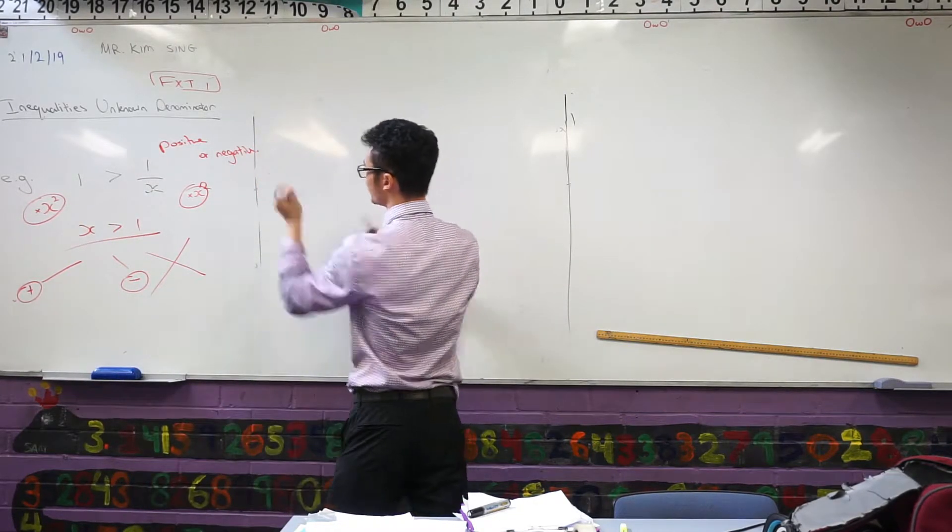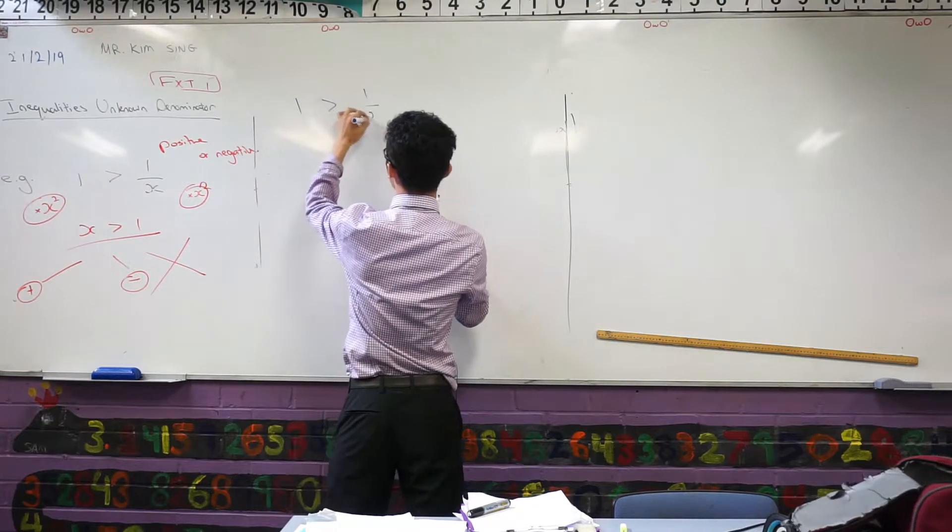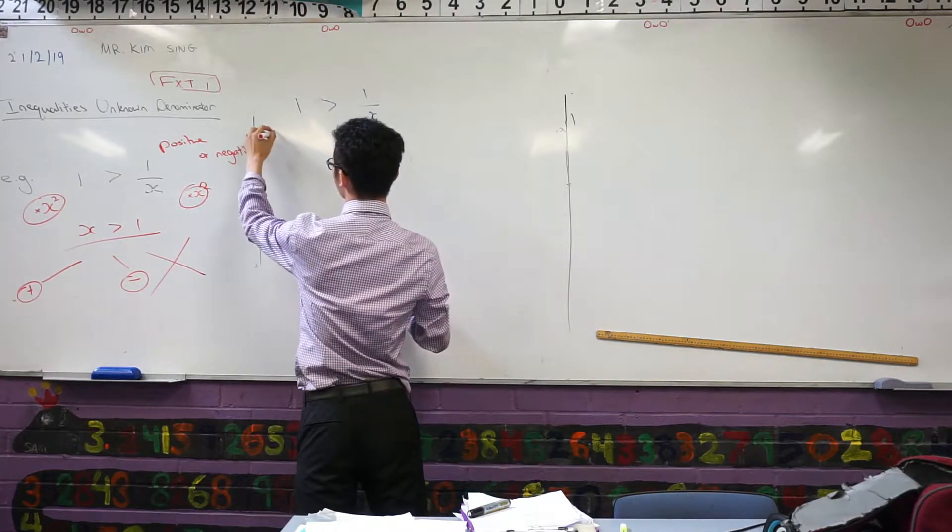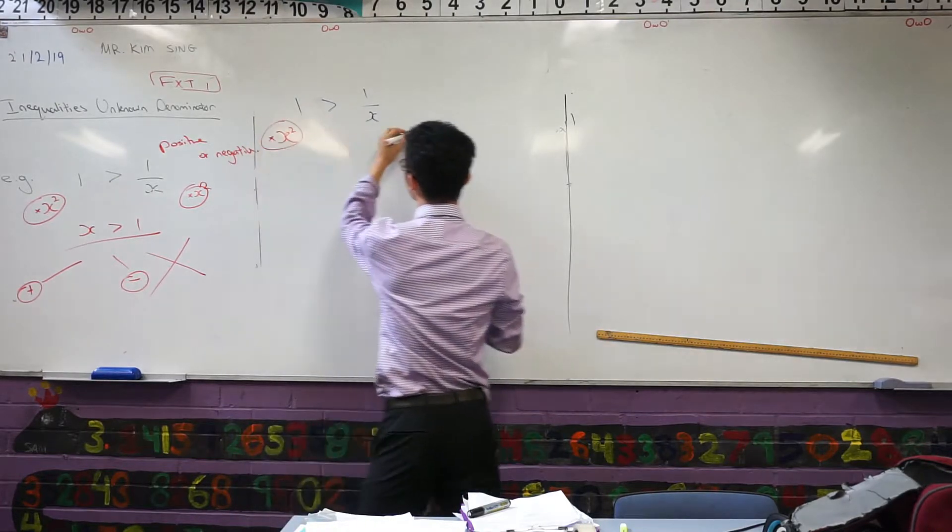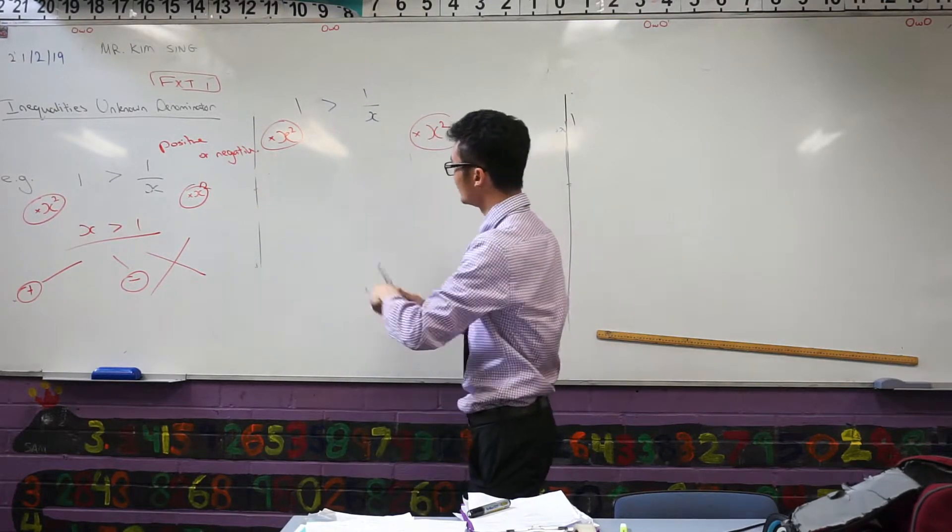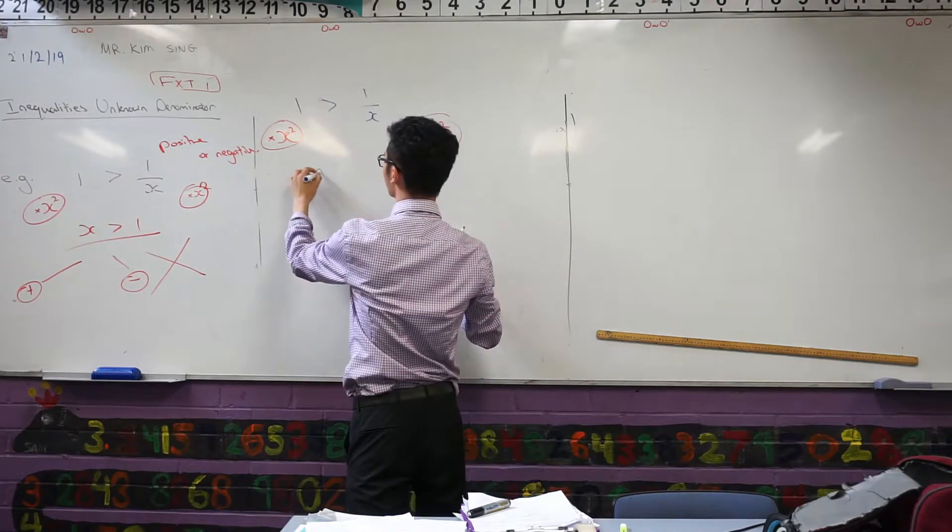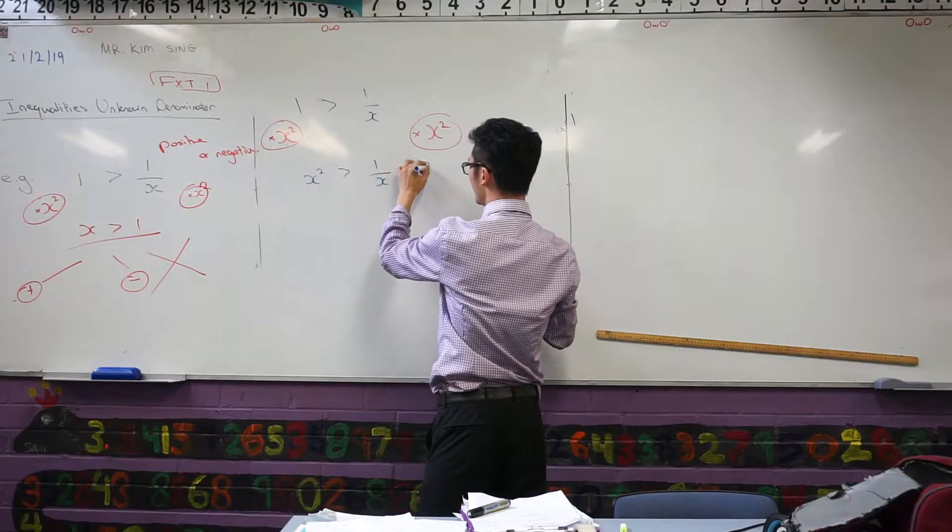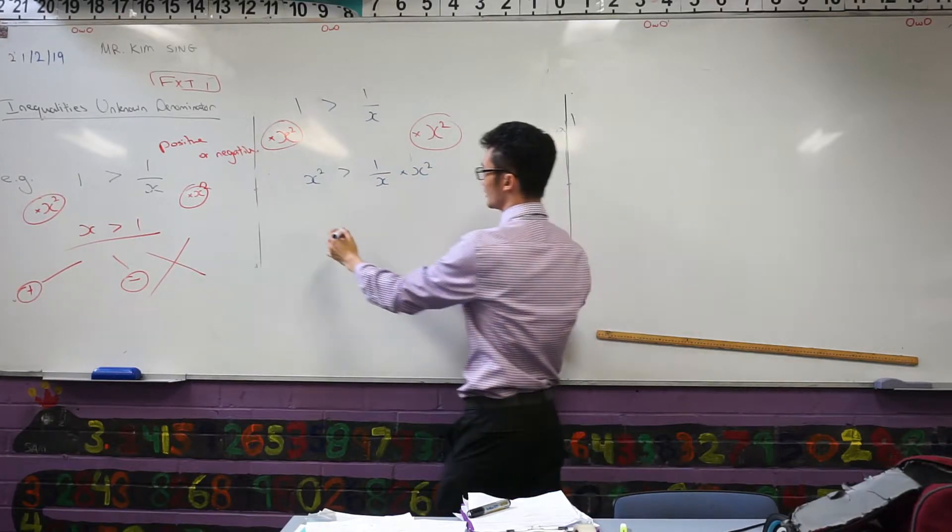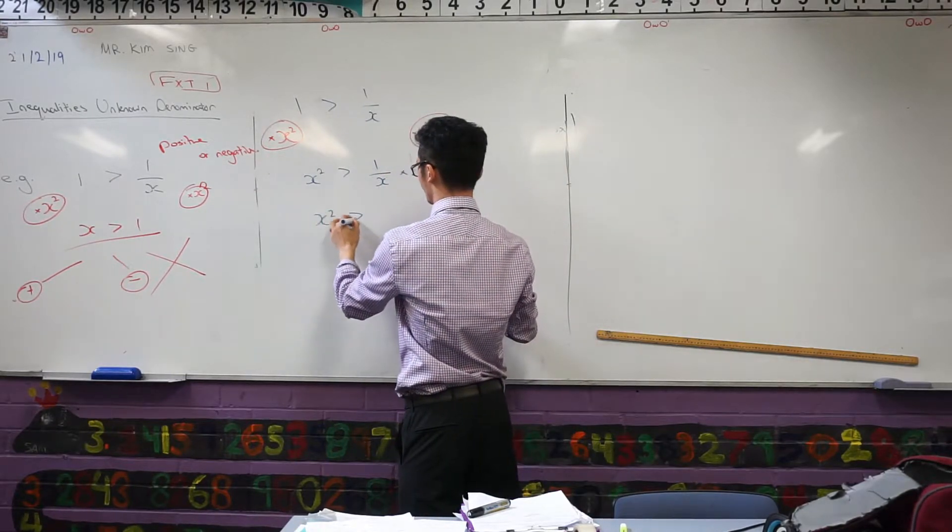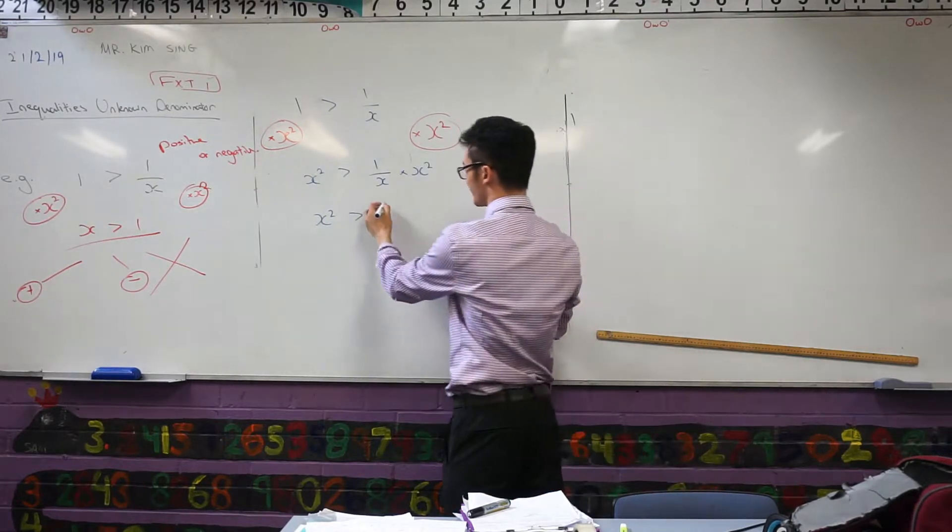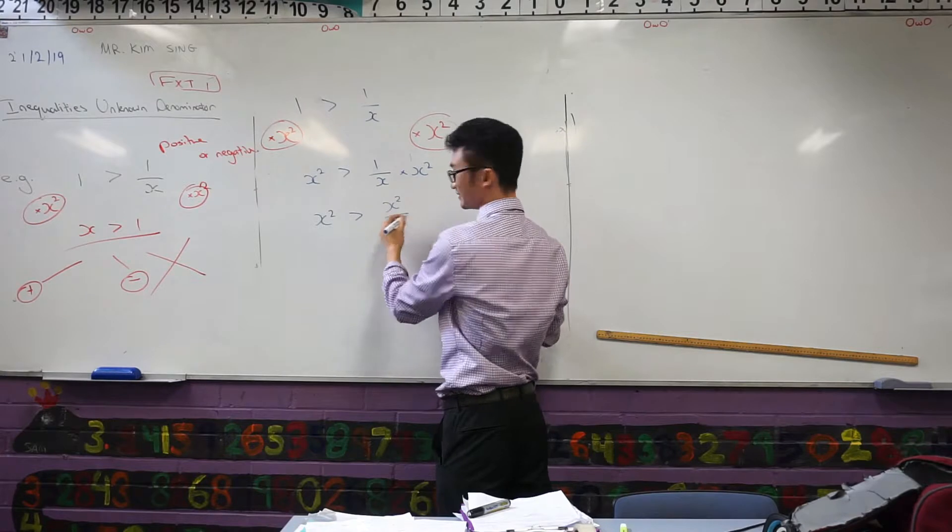1 greater than 1 on x. Let's change that now. So now I'm going to say, rather than multiplying both sides by x, I'm going to multiply both sides by x squared. What happens next? Well, on this side, I'm going to get x squared. On this side, I'm going to get 1 on x times x squared. I know that's going to simplify. What's that going to simplify to? x squared on x, which is just x.